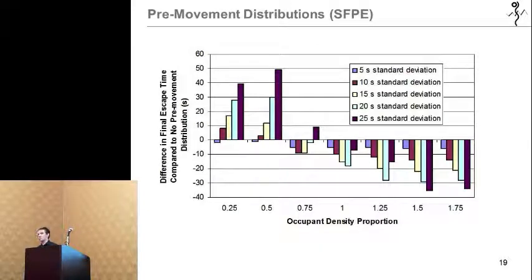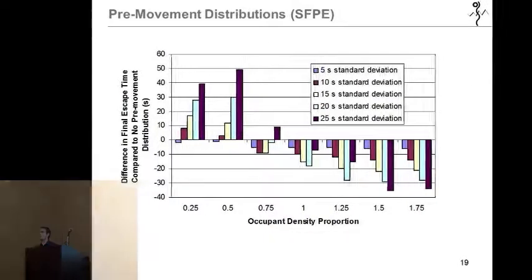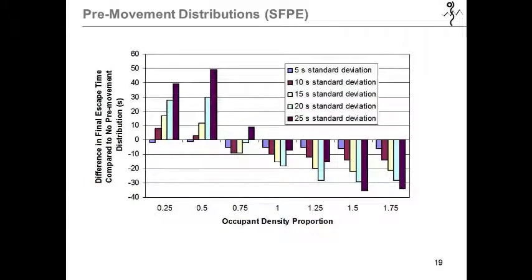Continuing on to distributions, what you see here are different occupant load groups, and they are compared to the same occupant load when no pre-movement distribution is applied. And as expected, at low occupant density, they are driven by high pre-movement times. However, as density increases, there's a benefit from the pre-movement distribution as occupants are able to begin to move to exits earlier and begin queuing.